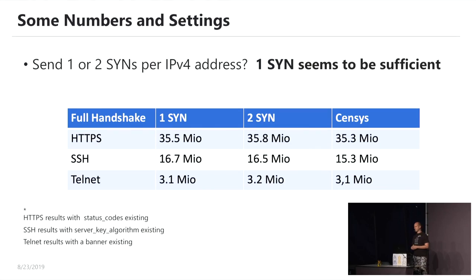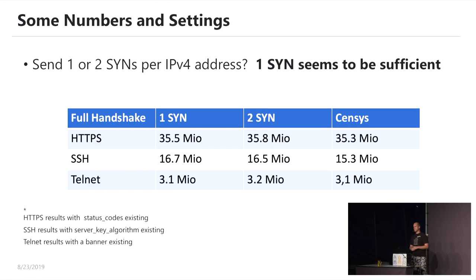Next question: use one SYN or two SYNs per target? We tested it — sending double SYNs makes no sense because results don't double. It's negligible. You might see slightly better results on some protocols but slightly worse on SSH — within standard deviation. Compared to Censys, our results are highly comparable. Censys uses a /23, we use a /24 — meaning we have twice as many source IP addresses — and our results are somewhat better, though Censys has been running longer and likely has a bigger blacklist.